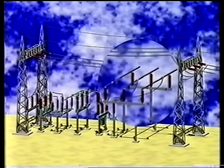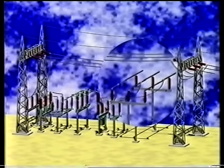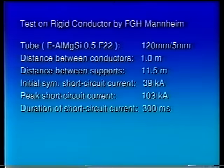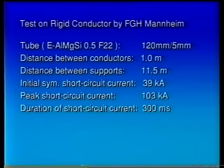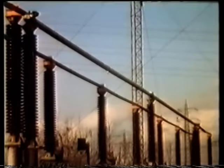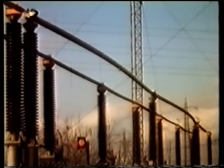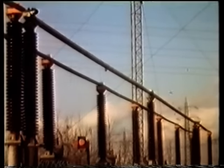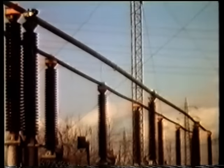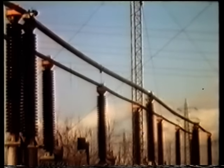This first test shows the effects on a bus bar made from tubular aluminium, with an outer diameter of 120 millimetres and a centre line distance between supports of 11.5 metres. The root mean square value of short-circuit current is 39 kiloamperes, with a duration of 300 milliseconds. This means that the peak short-circuit current of the line-to-line fault is 103 kiloamperes, which causes high stresses in conjunction with high amplitudes for the displacement of the tubes. The insulators are still strong enough to keep forces and bending moments.